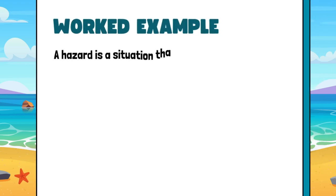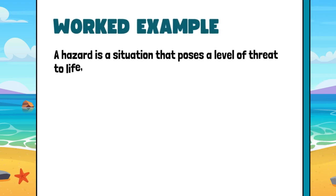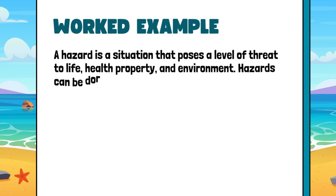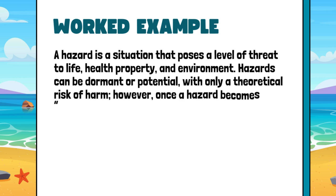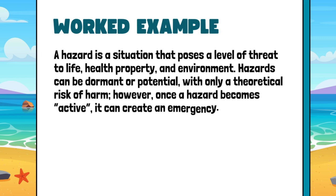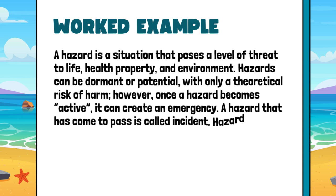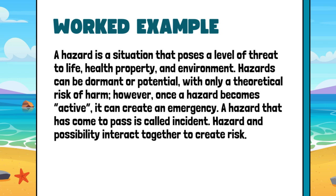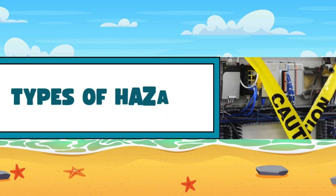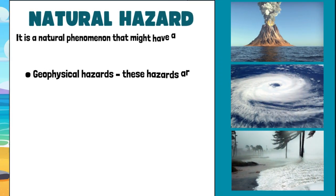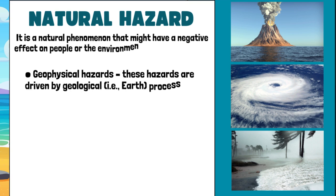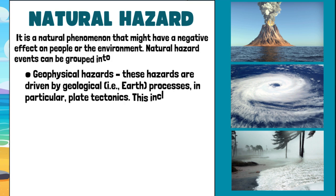Worked example. A hazard is a situation that poses a level of threat to life, health, property, and environment. Hazards can be dormant or potential, with only a theoretical risk of harm. However, once a hazard becomes active, it can create an emergency. A hazard that has come to pass is called an incident. Hazard and possibility interact together to create risk. Types of hazards. Natural hazard: it is a natural phenomenon that might have a negative effect on people or the environment. Natural hazard events can be grouped into four broad categories.